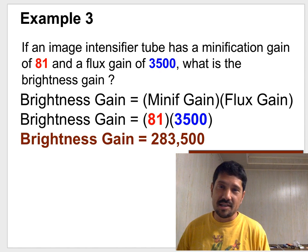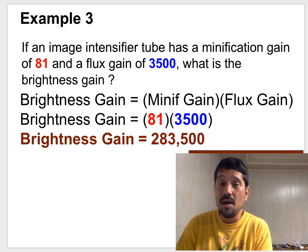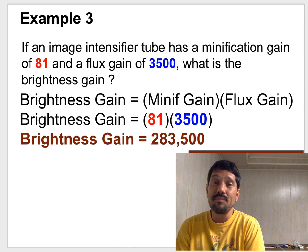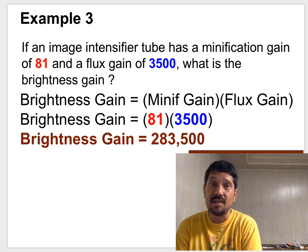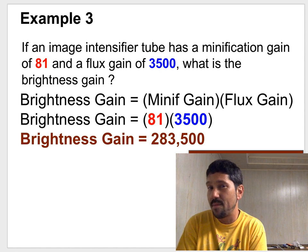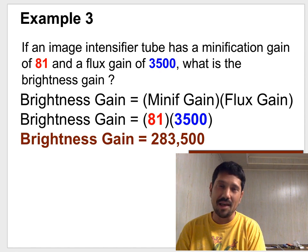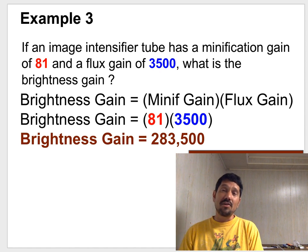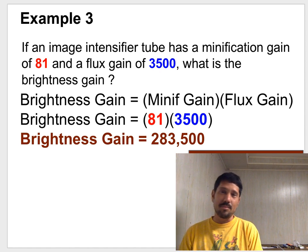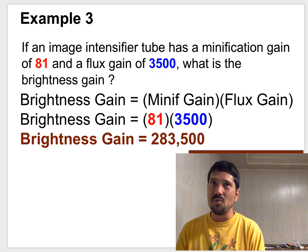And I could be a lot worse than example 3, though. Example 3 still gave you the minification gain. You could get a question that says an image intensifier tube has an output phosphor of this diameter, an input phosphor of that diameter, and when so many X-ray photons strike it, so many light photons come out. What is the brightness gain? And there you'd have to do example 1 and example 2 and combo them together with example 3 to give me one answer.